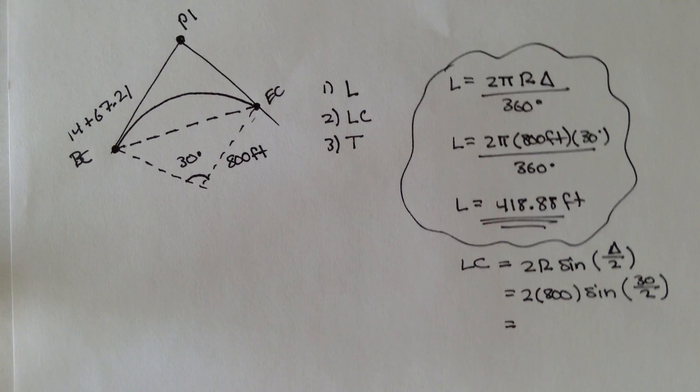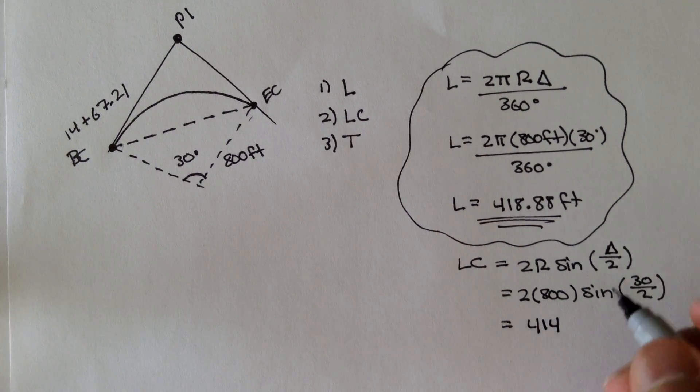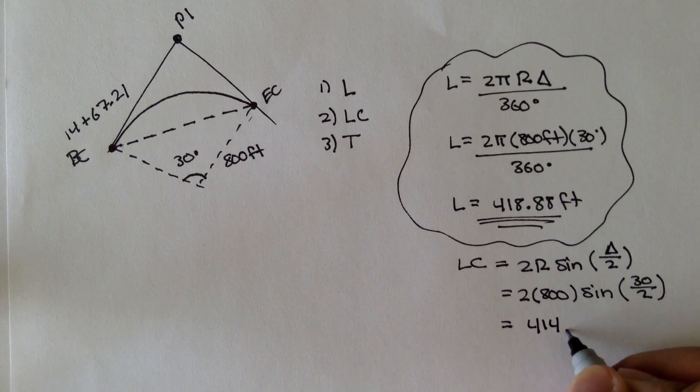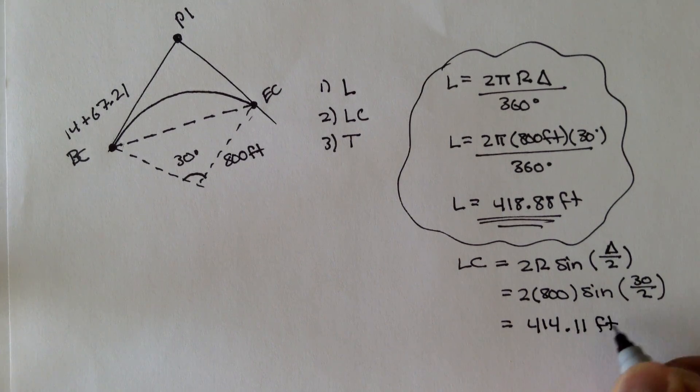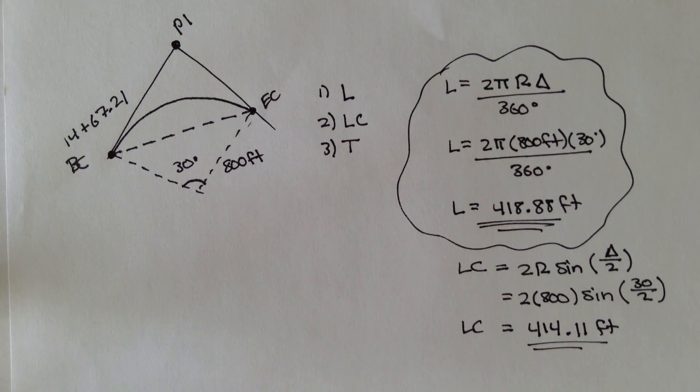And if we solve this out, we get that the long cord, long cord is equal to 414.11 feet. So the long cord, the distance from BC to EC is equal to 414 feet.